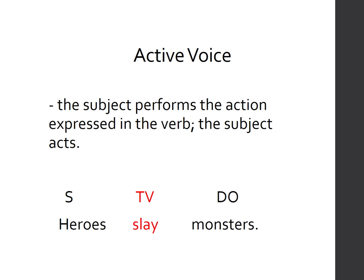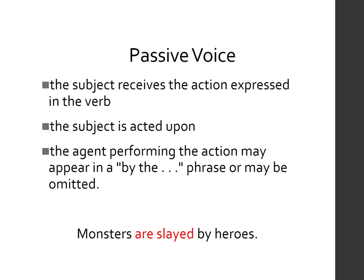Example: in the sentence 'Heroes slay monsters,' 'heroes' is the subject, and the same subject is also the doer and the agent. The verb is transitive, and whatever receives the action is called the direct object. Meanwhile, if it's passive voice, that means your subject receives the action expressed in the verb — it is acted upon.